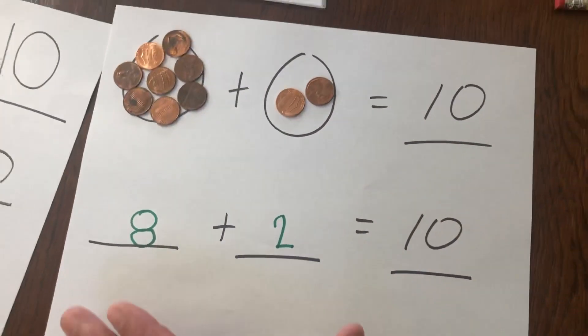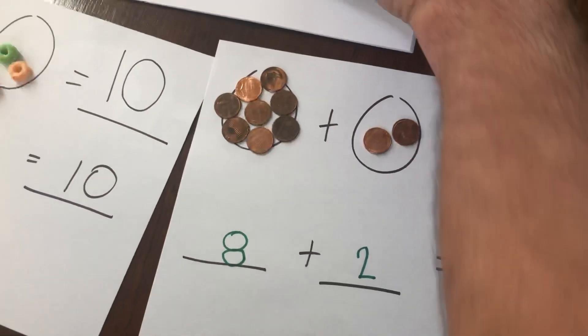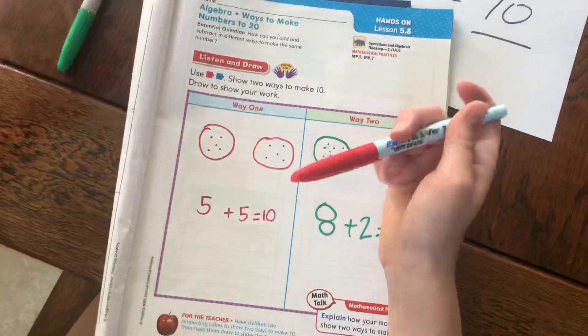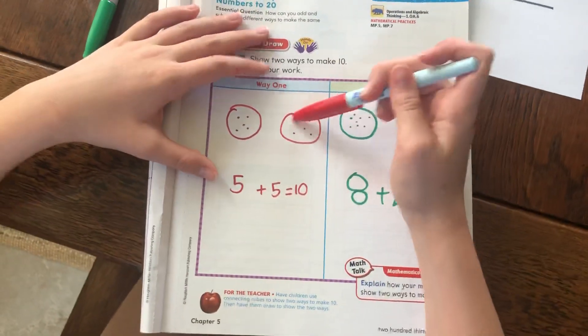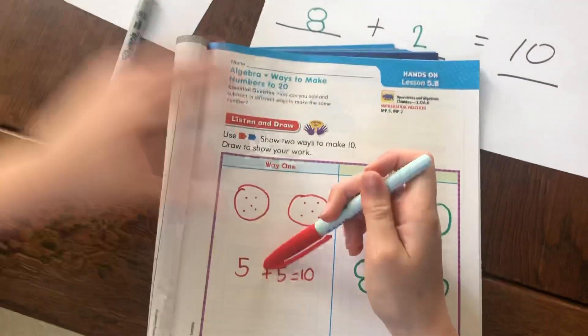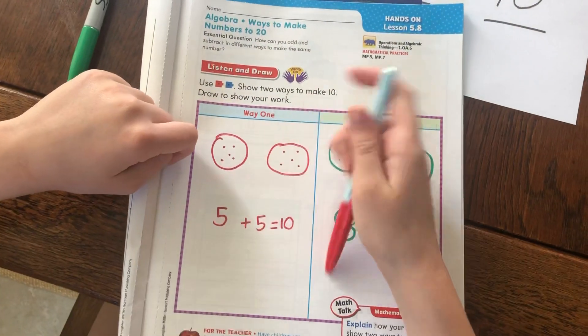So when you broke up your ten into two numbers, you got eight and two. So what would this look like on your paper? For this one, I drew two circles and then put five in each. Because if you can see, there's five in each circle in there. And then the same as right here, I wrote five plus five equals ten.